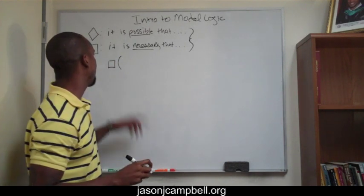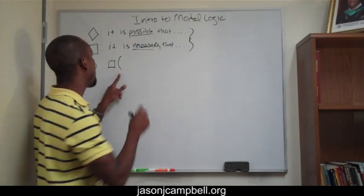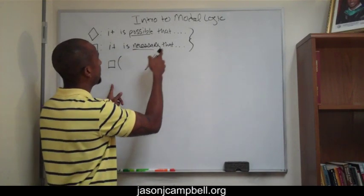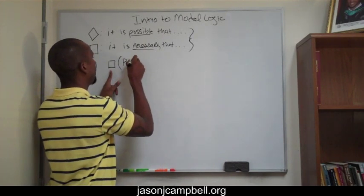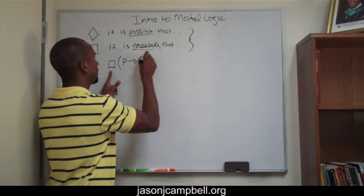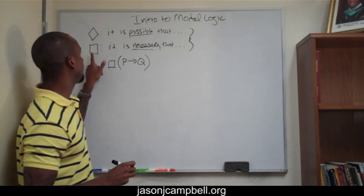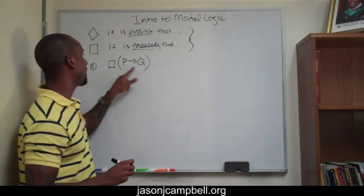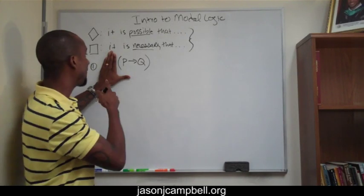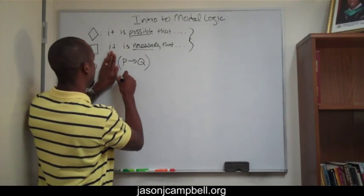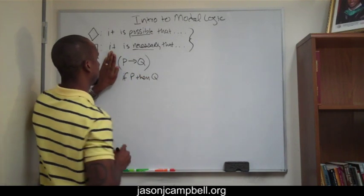So we know that the square symbol means 'necessary.' So if it is necessary that - because we realize that it is necessary that - if P, then Q. And to have the operator square on the outside of this is easy. This means if P, then Q.